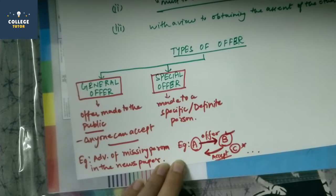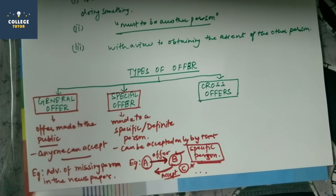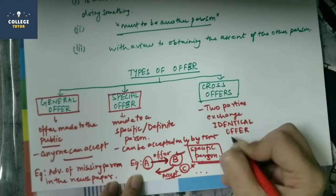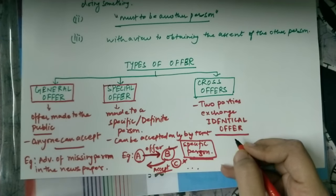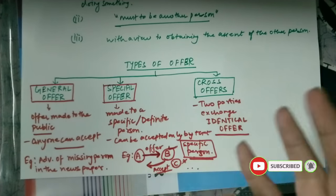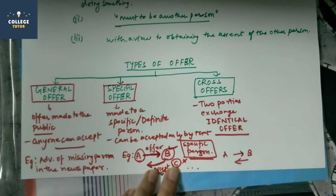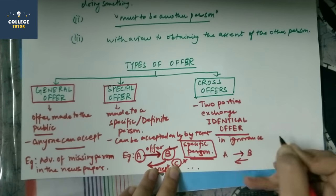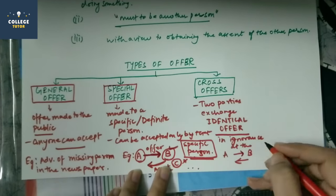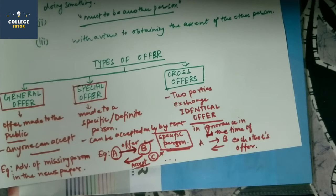Now the third type of offer is cross offer. So when two parties exchange identical offers, both are making the same offer to each other, but in ignorance at the time of each other's offer. They don't know that if A is offering something to B, and the same thing B is also offering to A, but both don't know that both at the same time are offering the same thing. In ignorance at the time of each other's offer, this is what cross offer means.